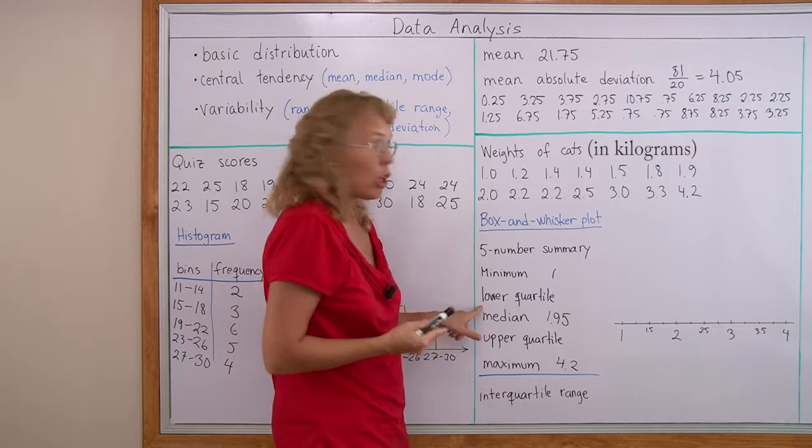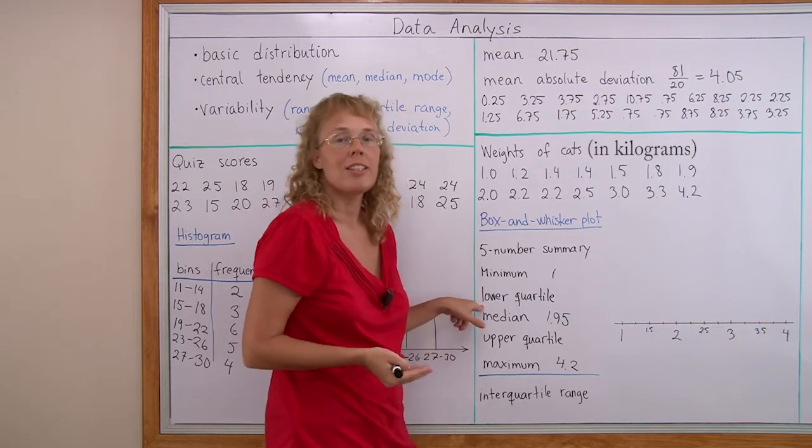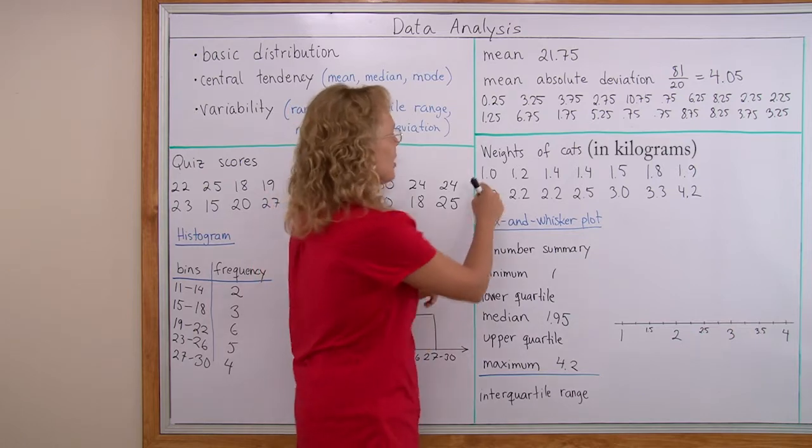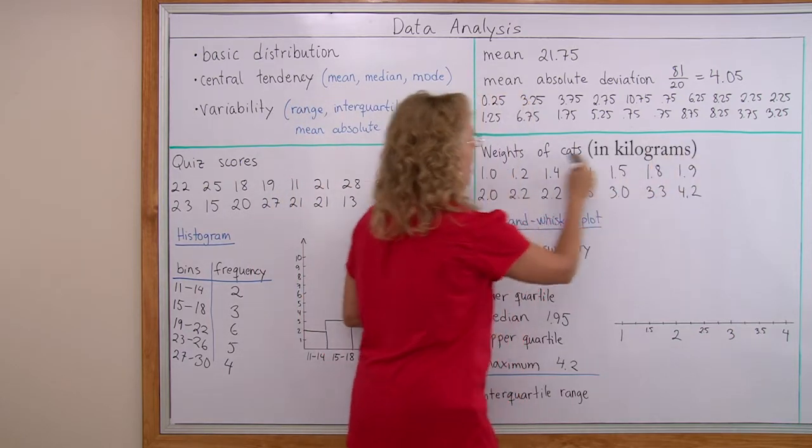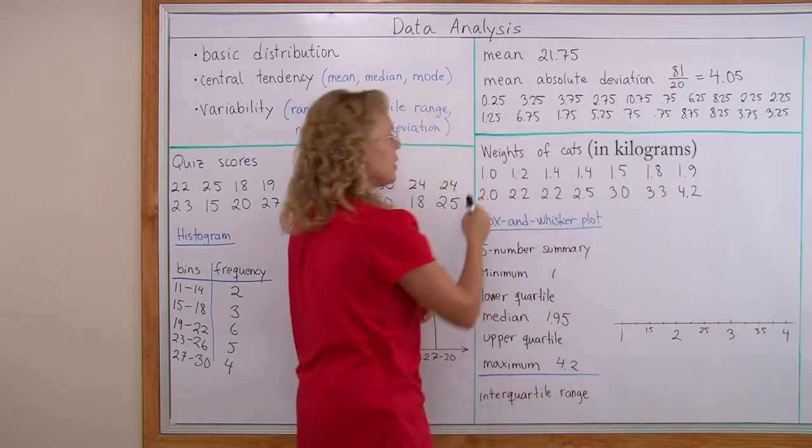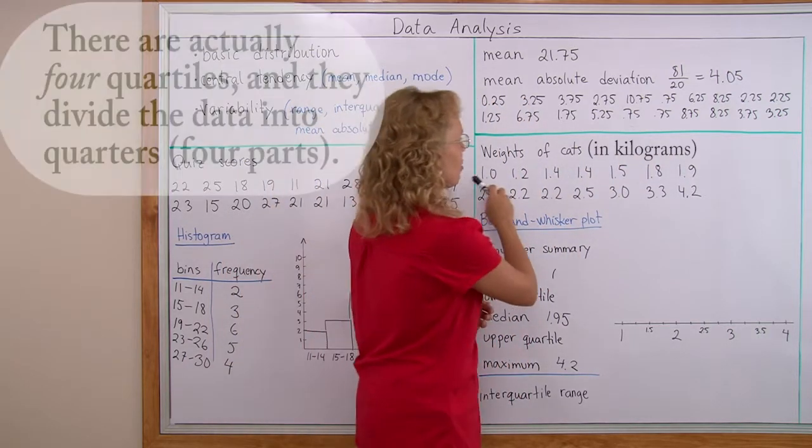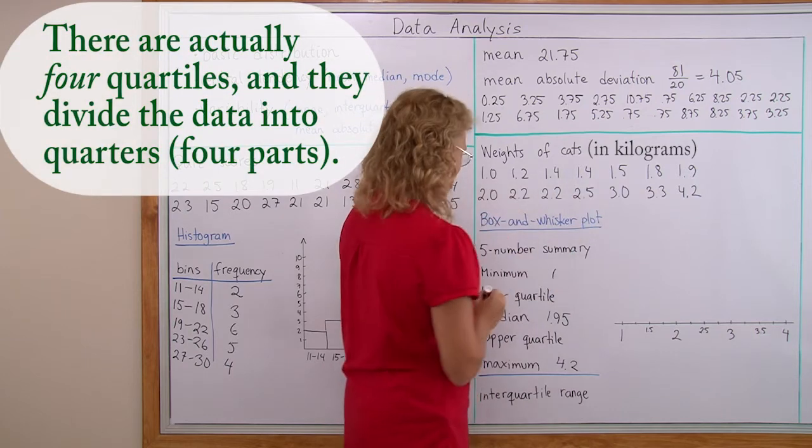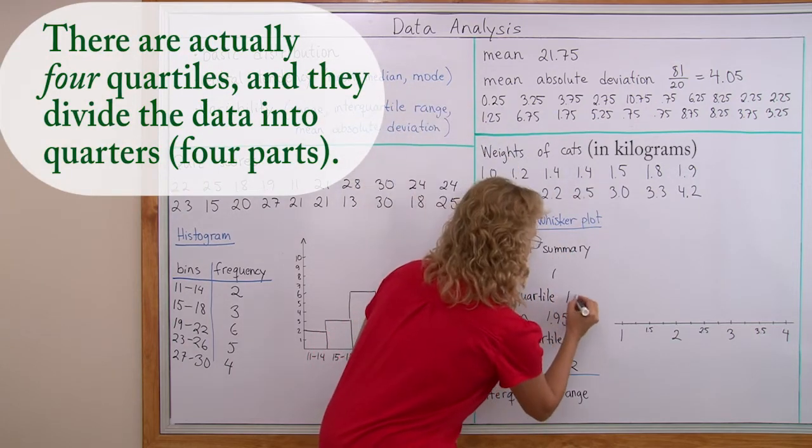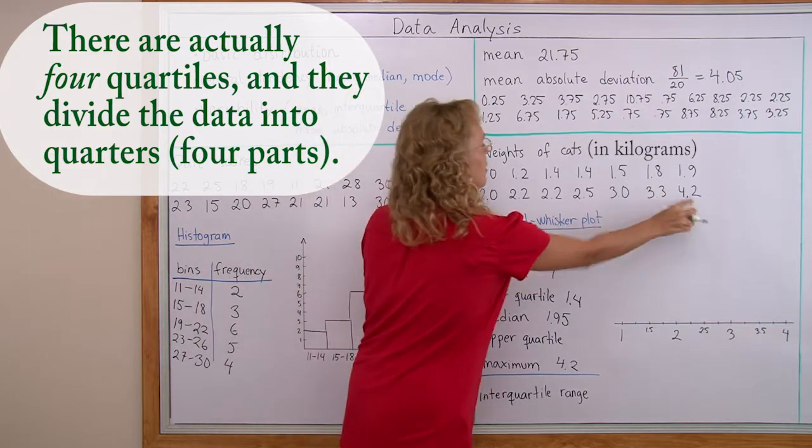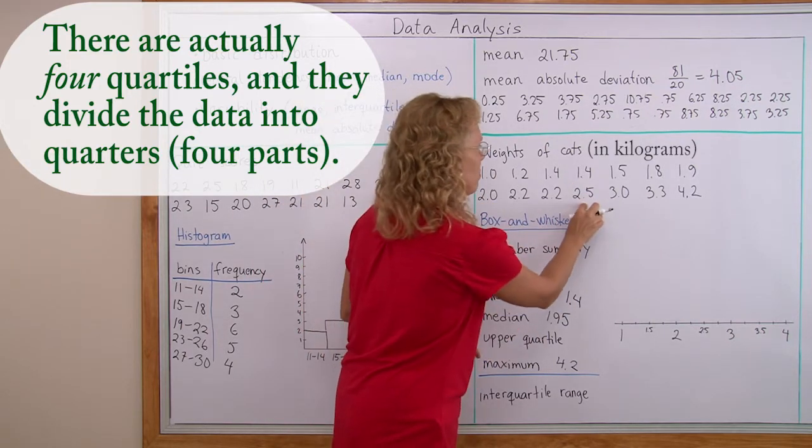Now lower quartile is the median of the lower half of data. So I'll just look at this half, this lower half of these data items here and I take the median of that, the middle-most number in that. So that would be this here, 1.4. And the same for upper quartile - I look at the upper half of the data and take the middle-most number, 2.5.